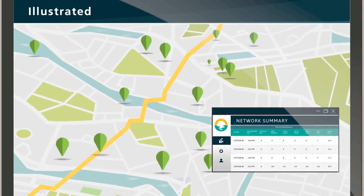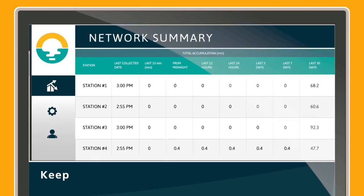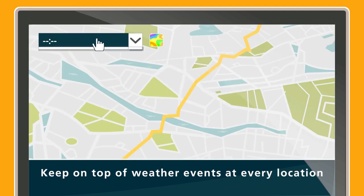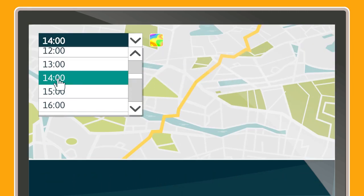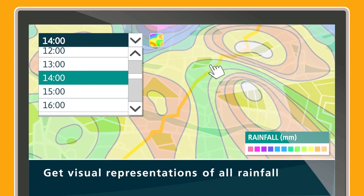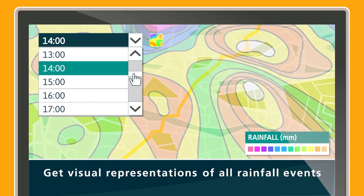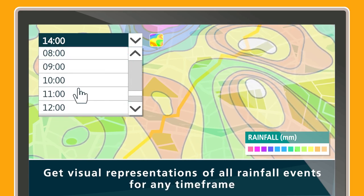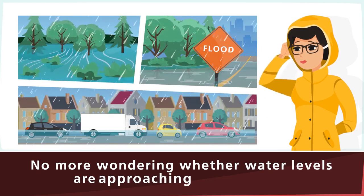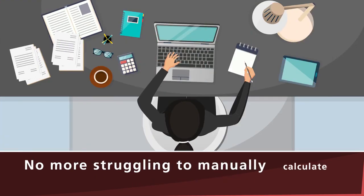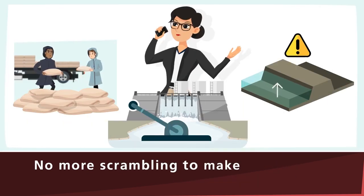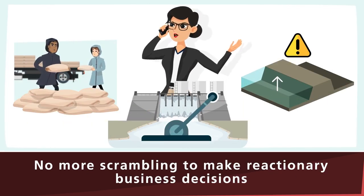This information is displayed across your network, keeping you on top of weather events at every location. Reporting across your network couldn't be easier — one click generates a visual representation of all rainfall events that occurred across your network for any timeframe you'd like to report on. No more wondering whether water levels are approaching critical levels, no more struggling to manually calculate and report on your precipitation data, and no more scrambling to make reactionary business decisions.